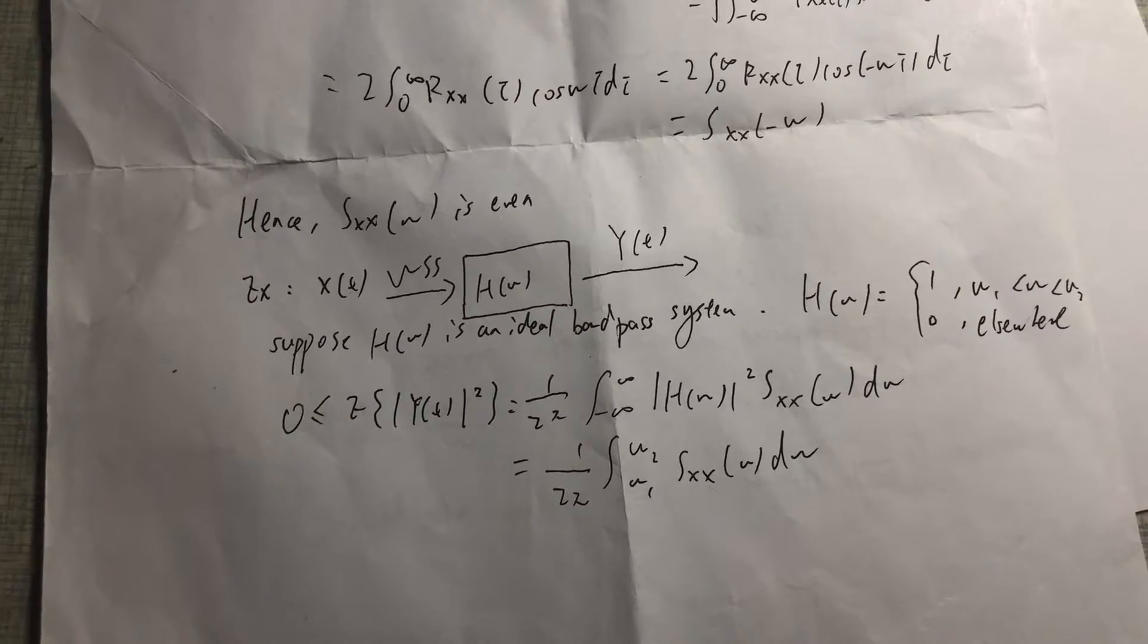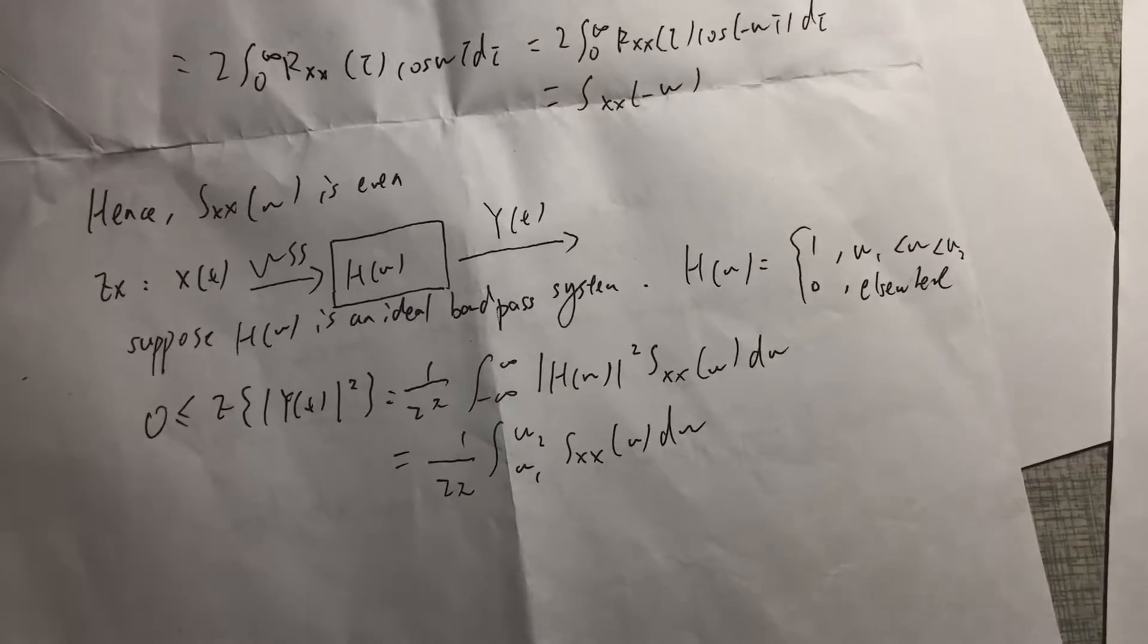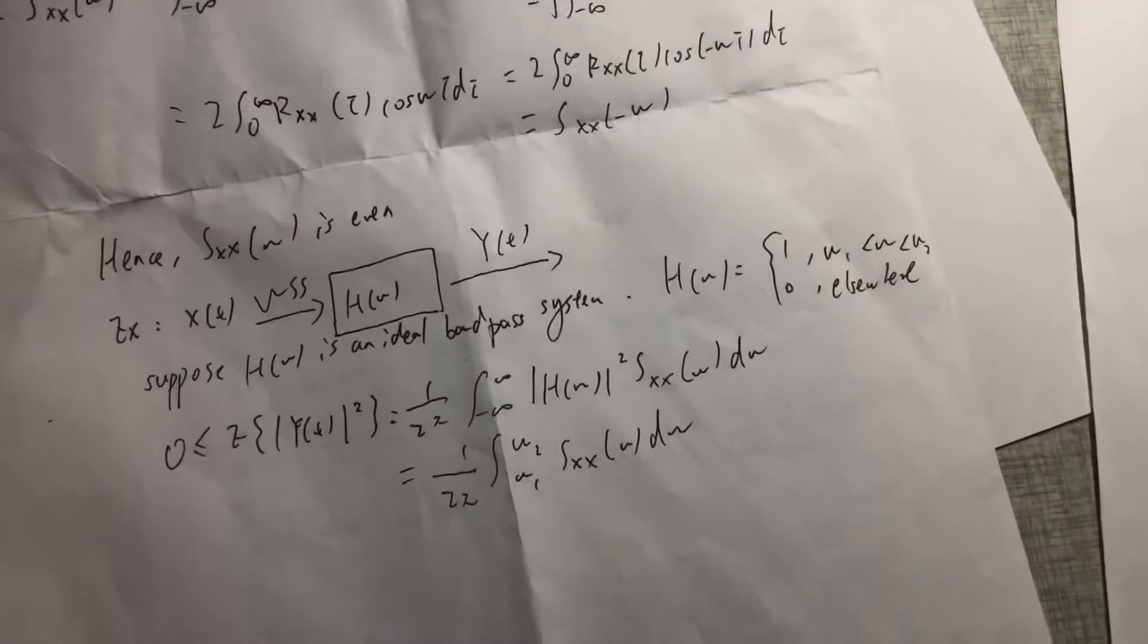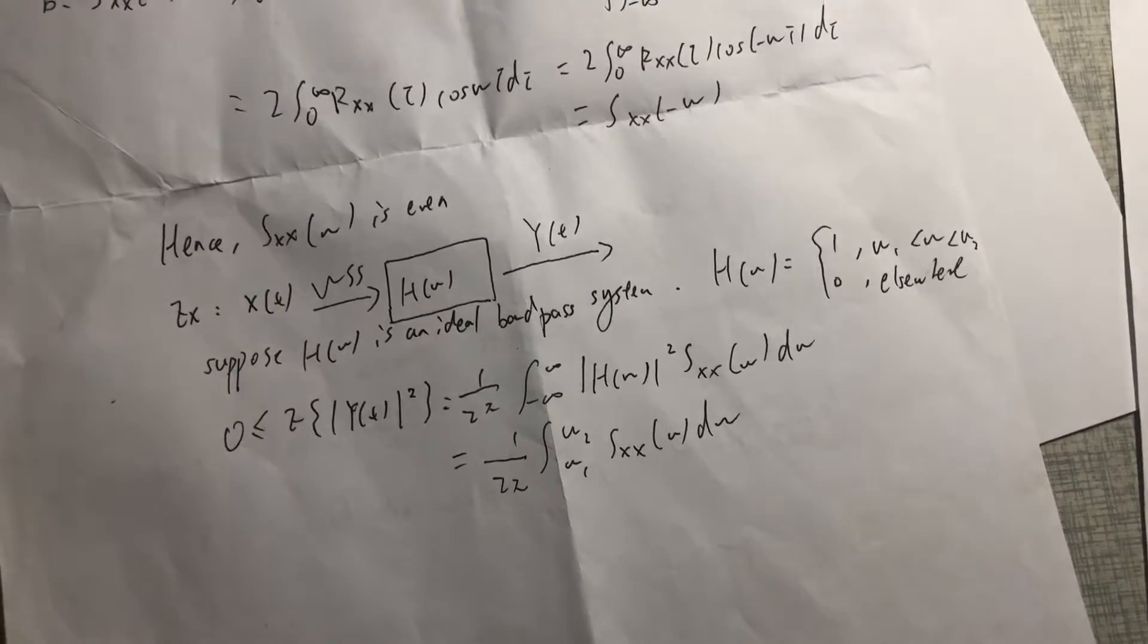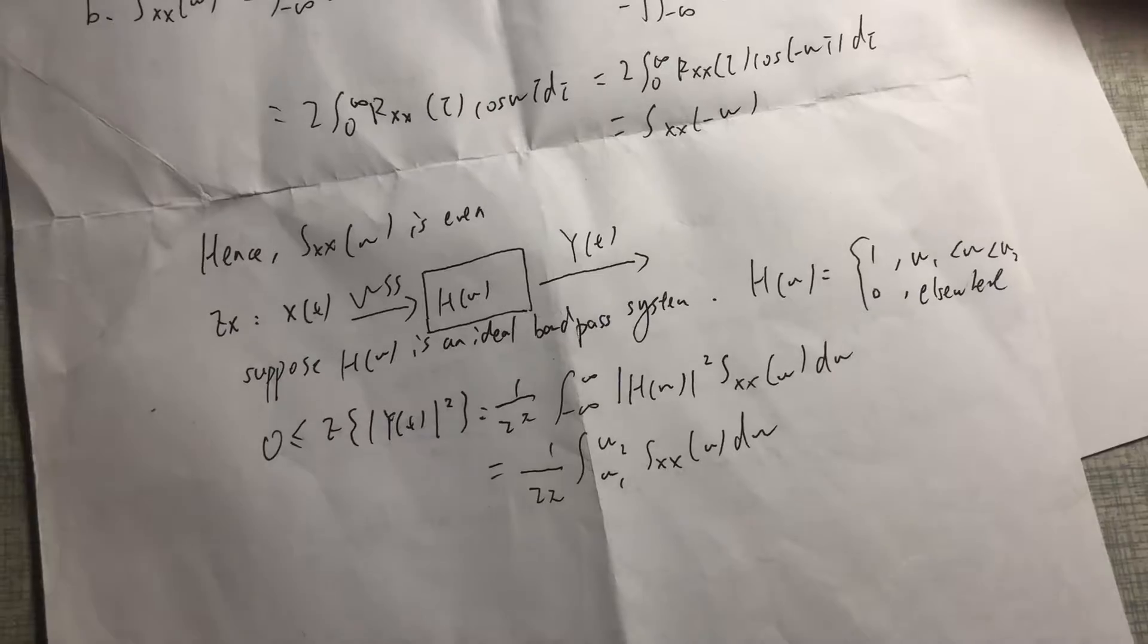H(ω) equals 1 if ω is between ω1 and ω2, and zero elsewhere.